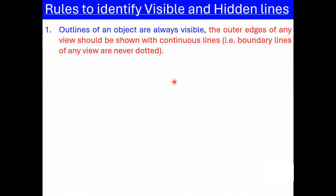Rule number 1: The outline of any view or object is always visible. This means the outer edges of any view should be shown with a continuous line, i.e., boundary lines of any view are never dotted. The outline of any view is represented by a continuous line which will never be dotted.